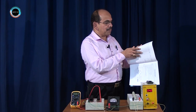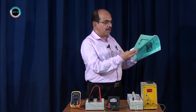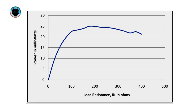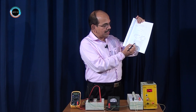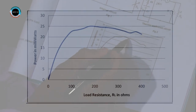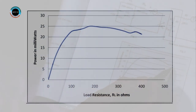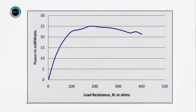This graph explains the actual variation of power with load. The load resistance is taken along the x-axis and the power delivered is taken along the y-axis. Initially for zero load resistance there is zero power; as load resistance increases, power increases, reaches a peak value, remains almost constant, and then starts decreasing. The point corresponding to maximum power is near RL = 300 ohms on this graph.